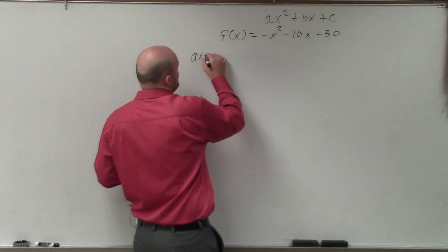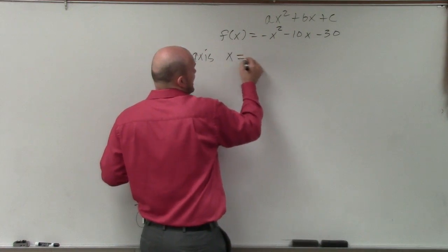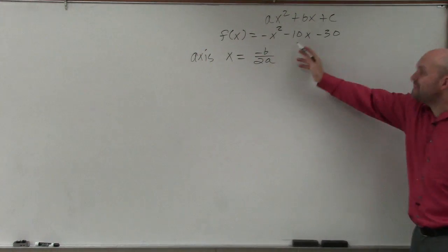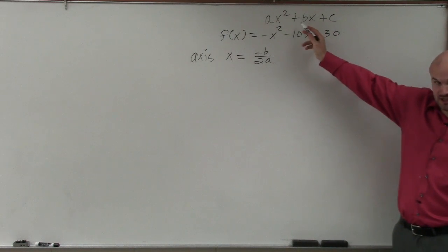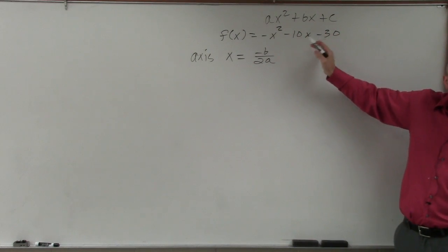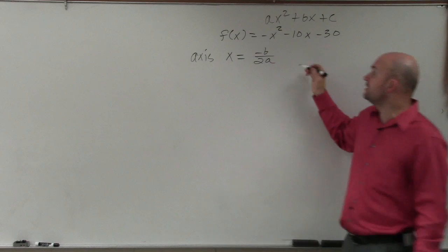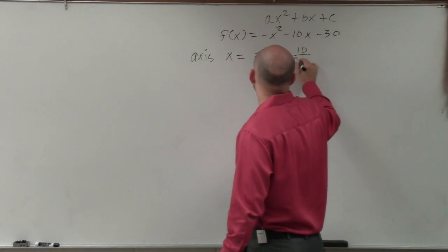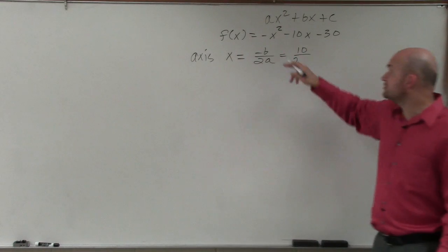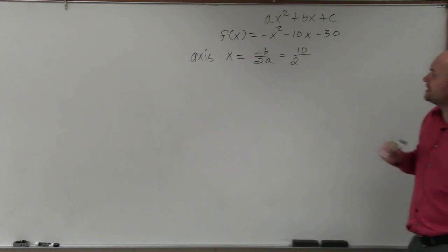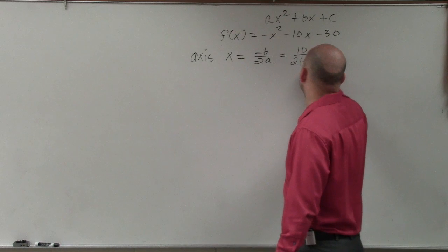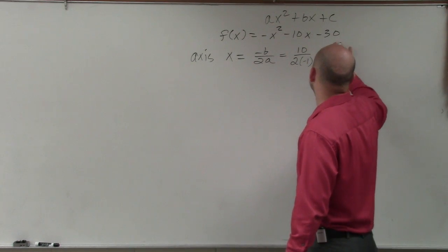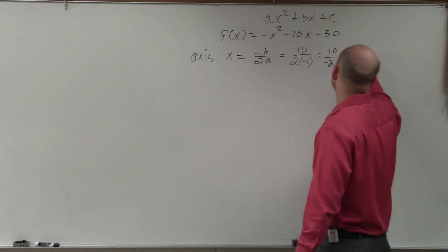So to find the axis of symmetry, the formula we used was x equals negative b divided by 2 times a. Please remember that b is the number in front of your linear term. It's not x. b is the number that's being multiplied. So b is negative 10. So the opposite of negative 10 is positive 10 divided by 2 times a, which you can see in this case, a is negative 1. So therefore, I have 10 over negative 2, which equals negative 5.